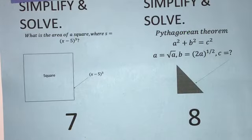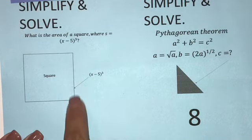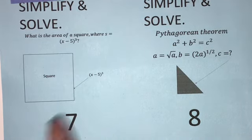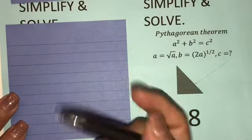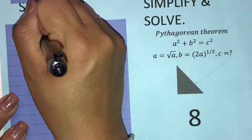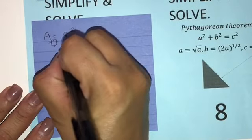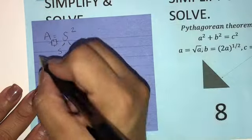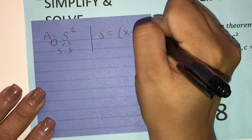Number 7, what is the area of a square where s is equal to x minus 5 cubed? So this whole side is equal to x minus 5 cubed. So we should remember that the area of a square is going to be side squared,